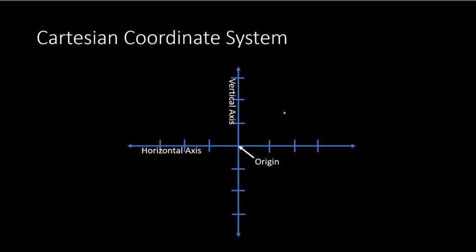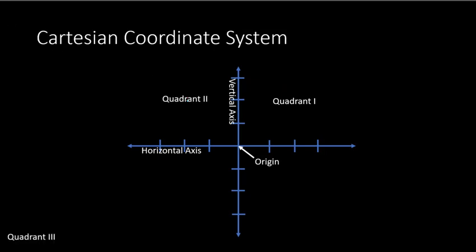Notice there are four different parts of this coordinate system. The top right corner is called Quadrant 1. Going counterclockwise, the top left is Quadrant 2, then Quadrant 3, and down here is Quadrant 4. Those are the different parts of the Cartesian coordinate system.